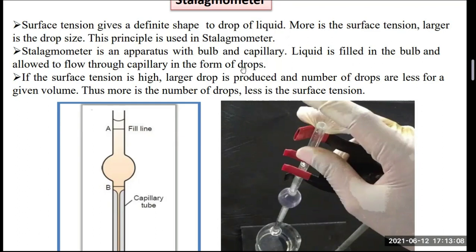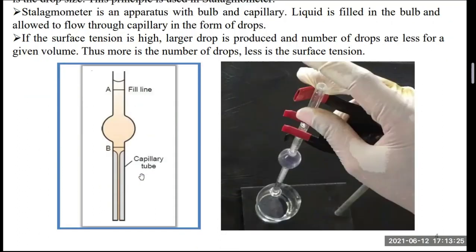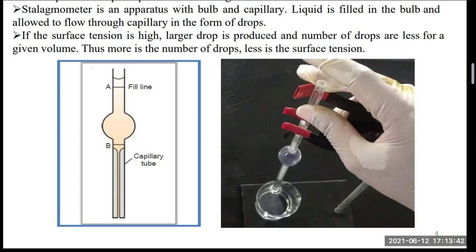A stalagmometer is an apparatus with a fixed bulb — it may be 5 ml, 10 ml, or 15 ml. Liquid is filled in the bulb and allowed to flow through a capillary in the form of drops. If surface tension is high, a larger drop is produced and the number of drops is less for a given volume. Thus, more drops means less surface tension.